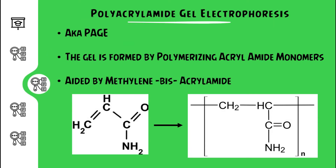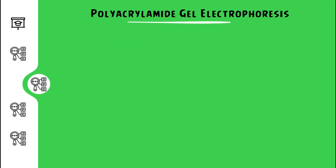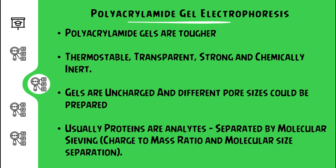The disadvantages of agarose gel are that electroosmosis is high and resolution is less when compared to polyacrylamide. The next type is polyacrylamide gel electrophoresis, also known as PAGE. The gel is formed by polymerizing acrylamide monomers in the presence of methylene bisacrylamide. Polyacrylamide gels are tougher, thermostable, transparent, strong, and chemically inert. The gels are uncharged and different pore sizes can be prepared. Usually proteins are the analytes, separated by molecular sieving based on charge-to-mass ratio and molecular size.